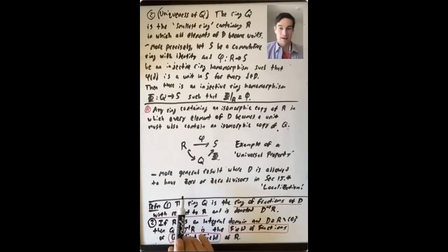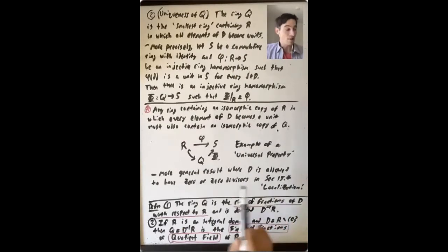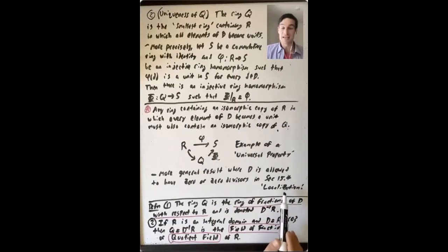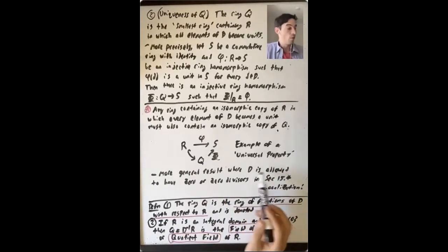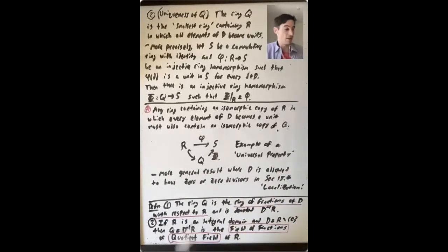There is a more general result than this theorem where D is now allowed to have zero or zero divisors — this is discussed in section 15.4 on localization. We already saw that if you allow zero or zero divisors in the denominators, then you're going to have some elements d that are not zero in R that become zero in this ring whose elements are equivalence classes of ordered pairs. What we lose is that R might not be a subring of this ring anymore.